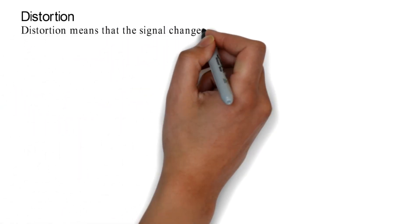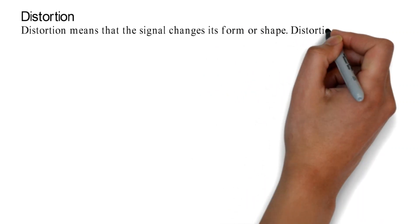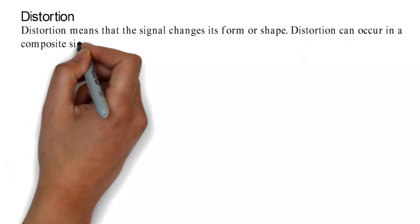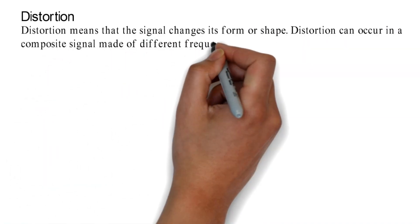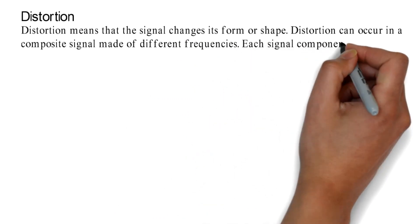Distortion. Distortion means that the signal changes its form or shape. Distortion can occur in a composite signal made of different frequencies.